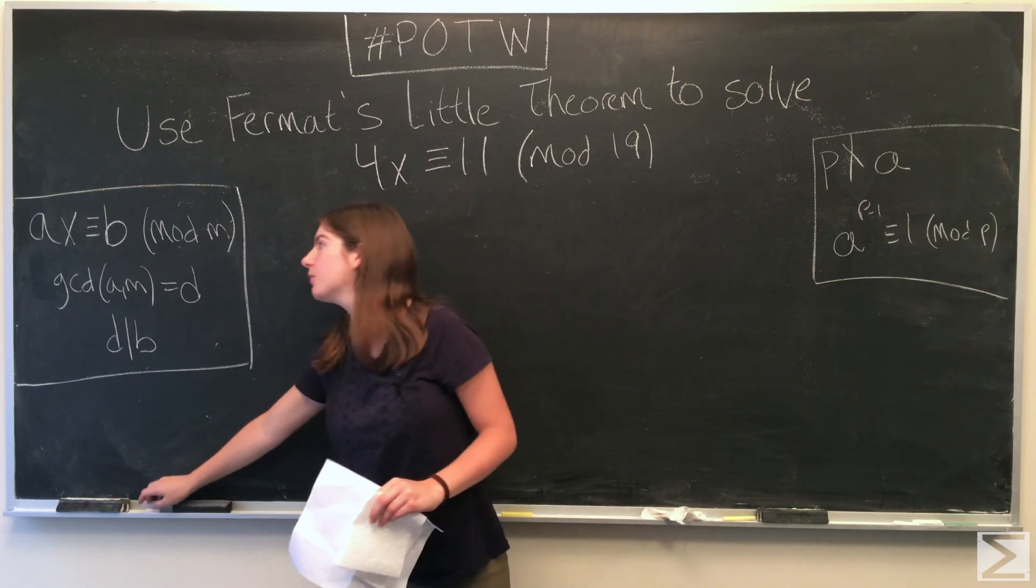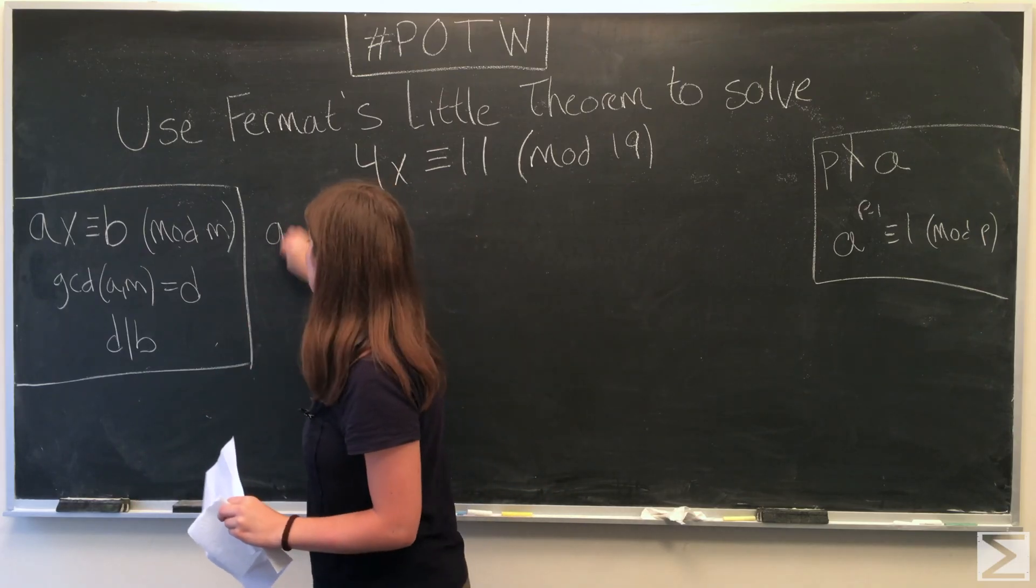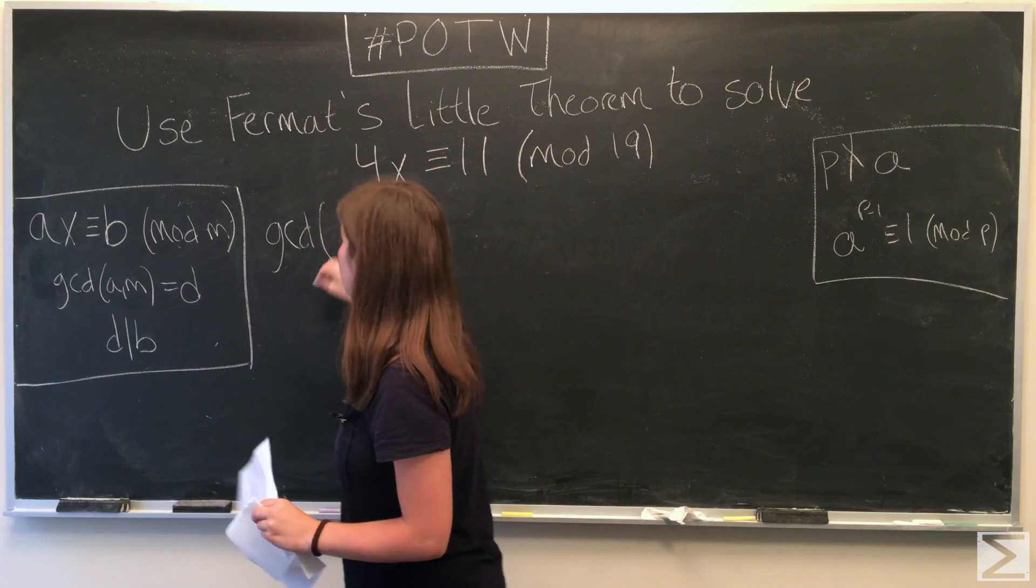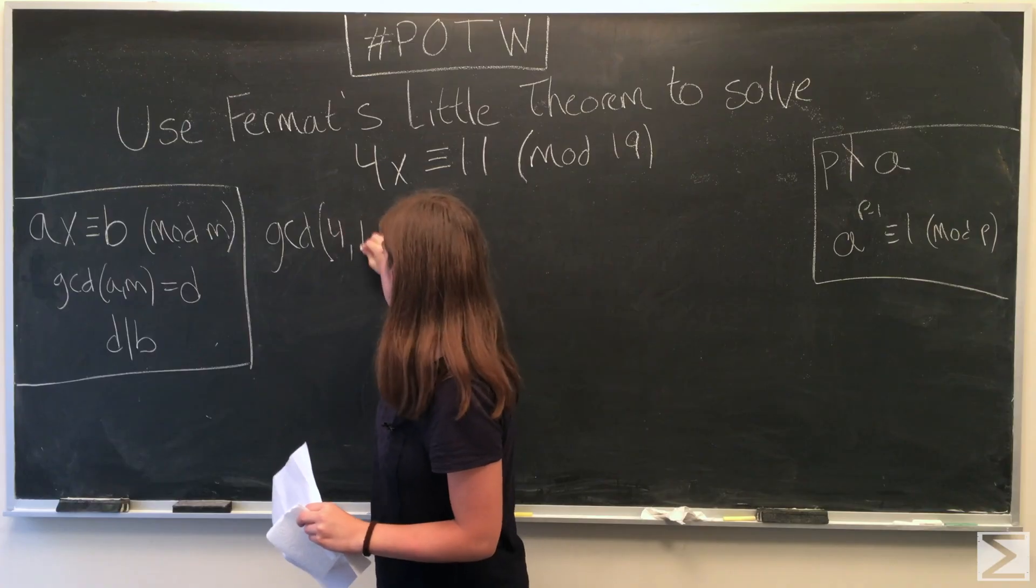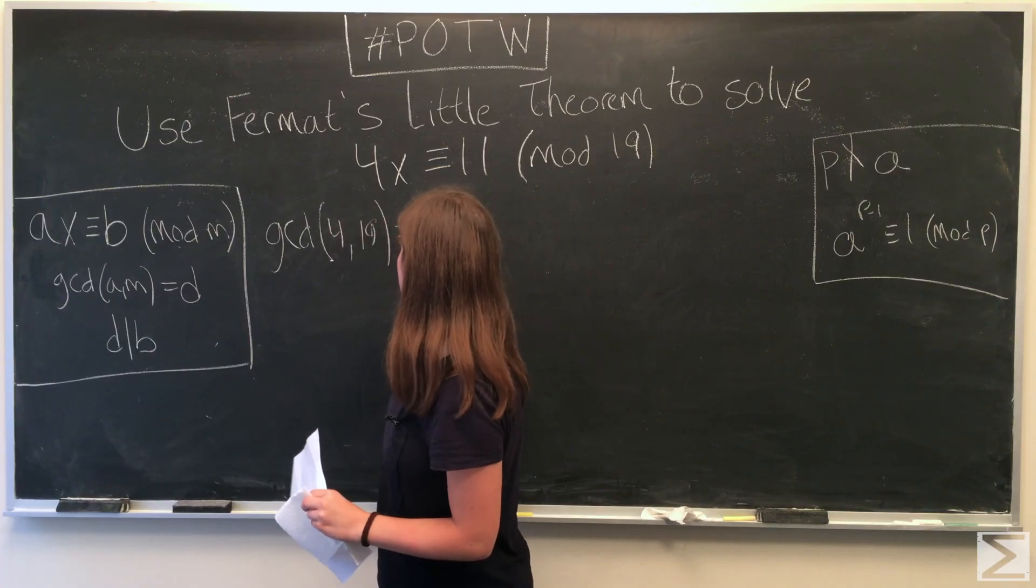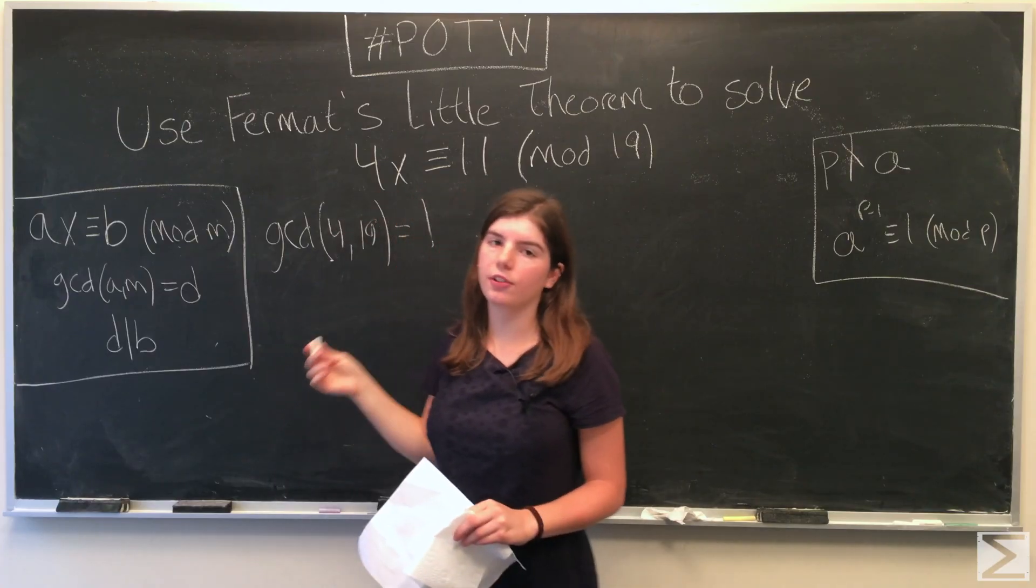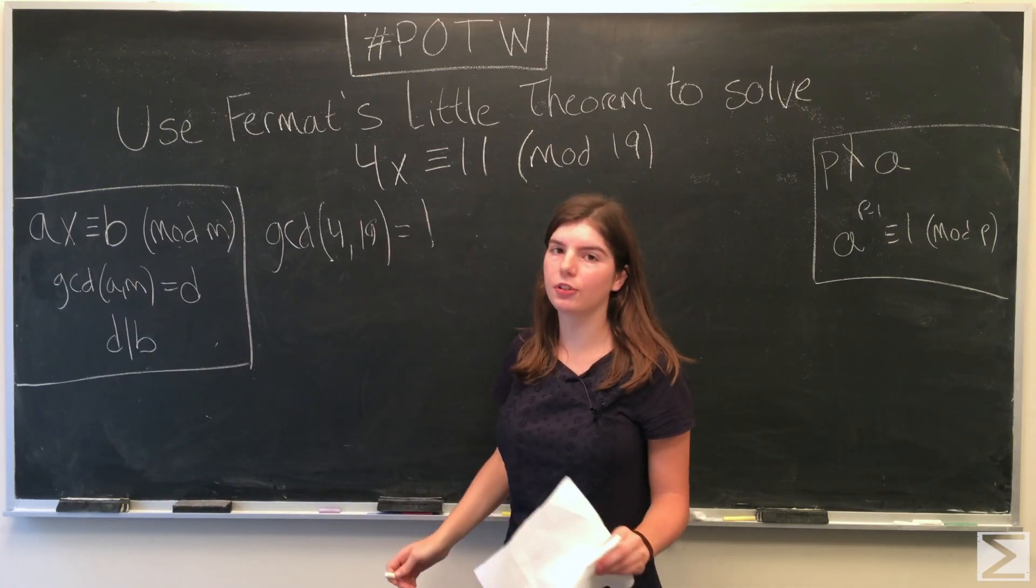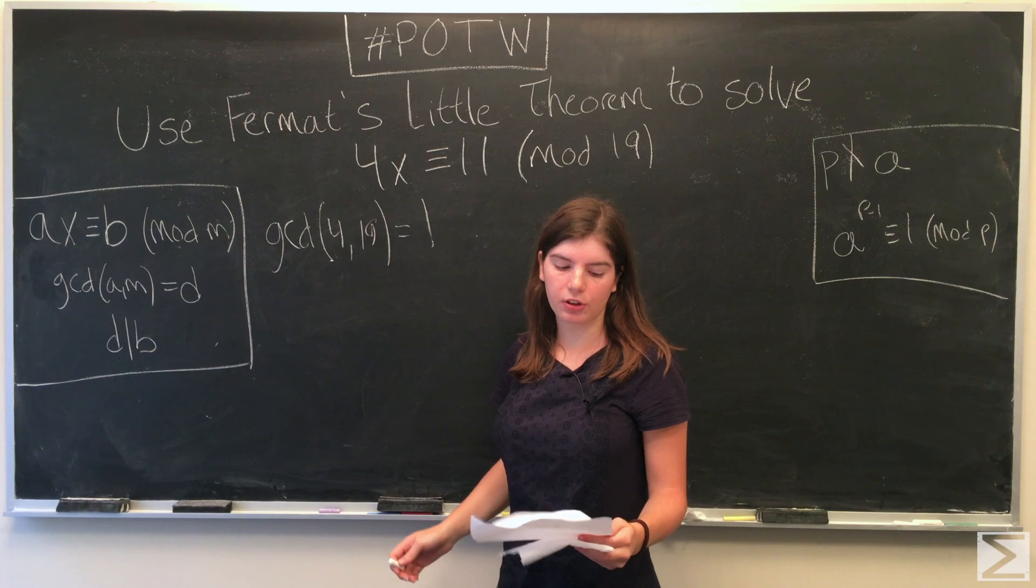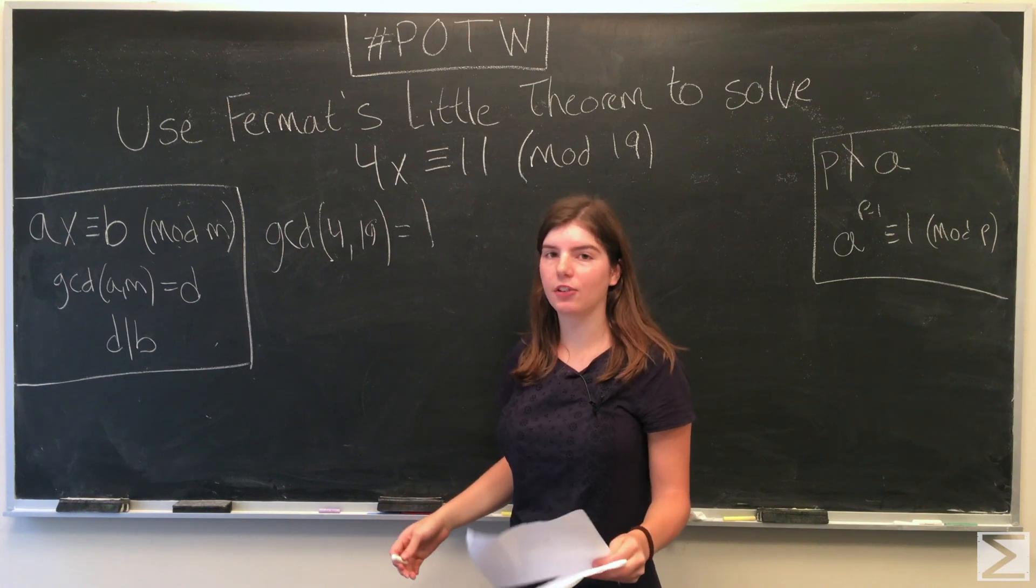So in our problem, we have the GCD. We're going to let A equal 4 and M equal 19. The greatest common divisor is 1, and 1 divides 11, so there's one solution. By solution, I mean congruence classes modulo 19.